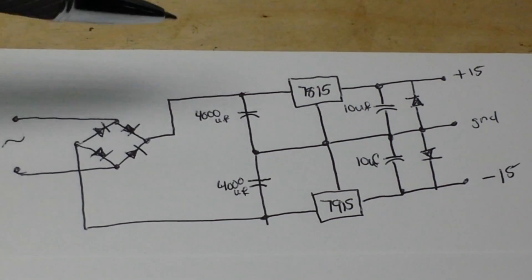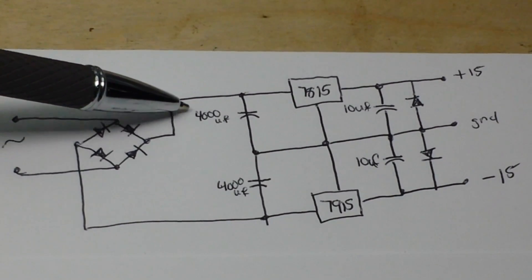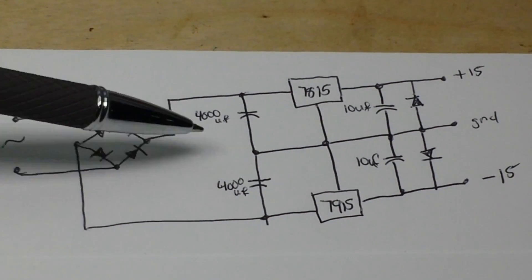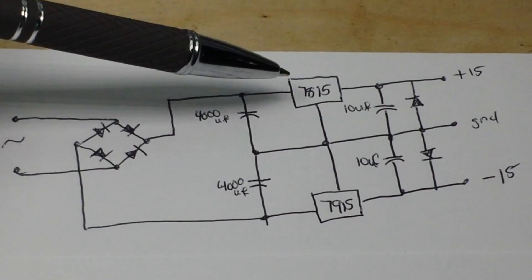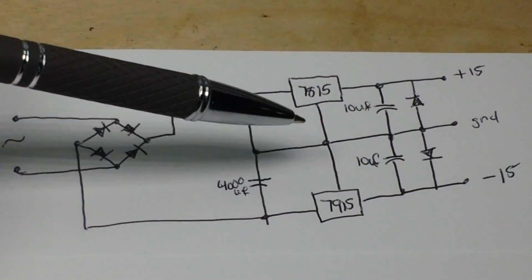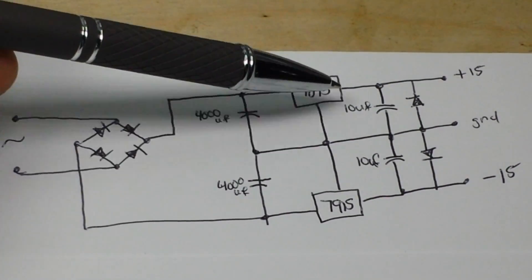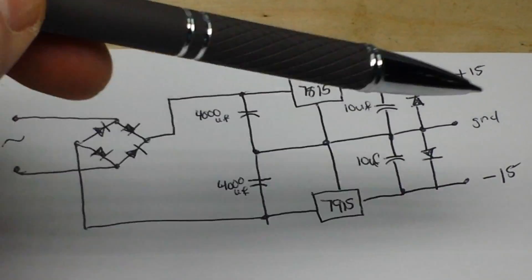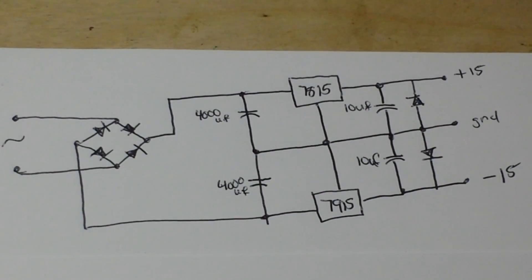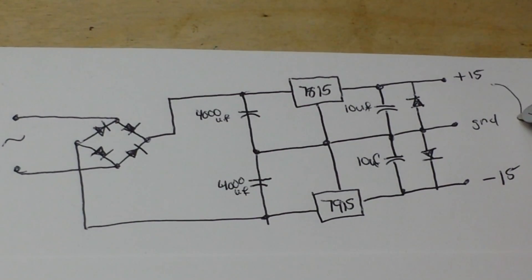Then we have our two main filter caps here, each are 4,000 microfarad. Then we have a positive voltage regulator, a negative voltage regulator, smaller filter caps on the outputs of those, a couple diodes to keep transients and stuff down, and then we have our output.